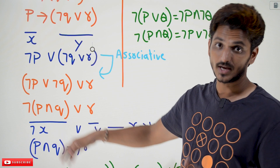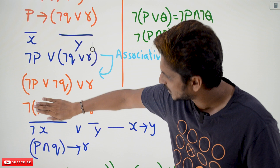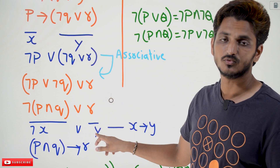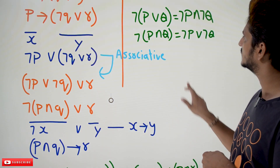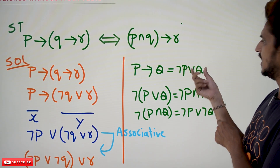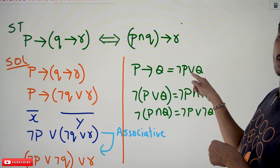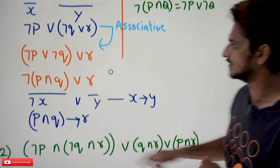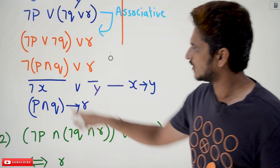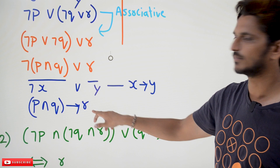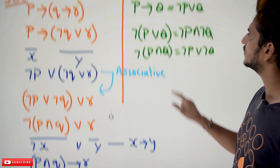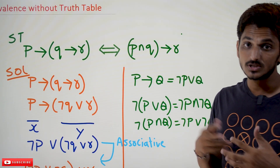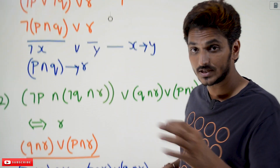This is what we got. Now again apply De Morgan's law: consider P conjunction Q as X and R as Y. Negation X disjunction Y can be written as X implies Y — that is what our formula says: P implies Q can be written as negation P disjunction Q, and negation P disjunction Q can be written as P implies Q. So negation X disjunction Y can be written as X implies Y. What is X here? P conjunction Q. Therefore we get (P conjunction Q) implies R — this is exactly what we needed.